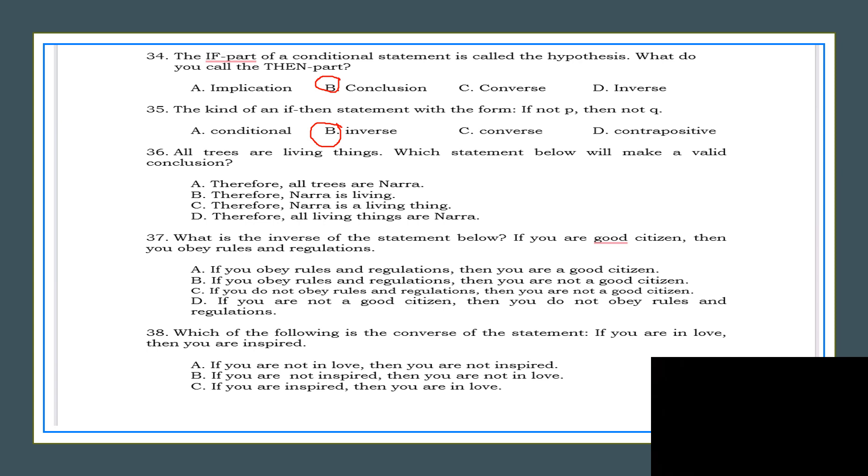All trees are living things. Which statement below will make a valid conclusion? All trees are living things. Which of the following will make a valid conclusion? The answer is C, therefore Nara is a living thing. What is the inverse of the statement below: if you are a good descendant then you obey rules and regulations?